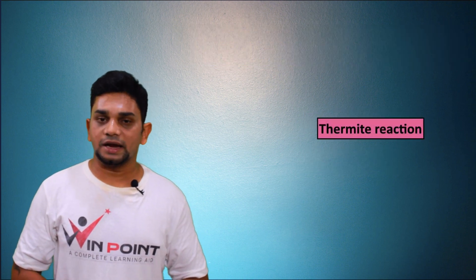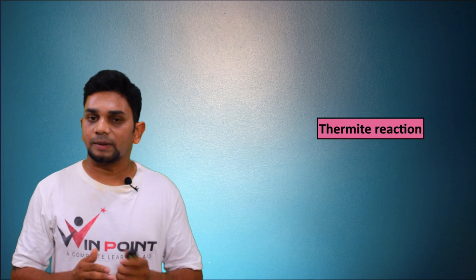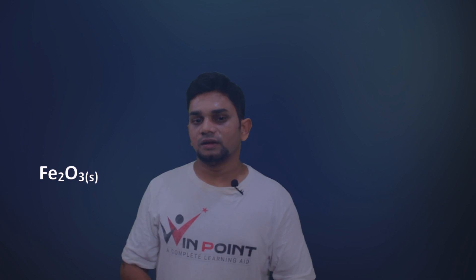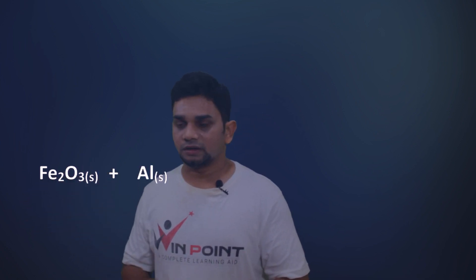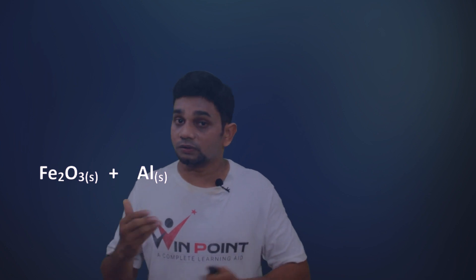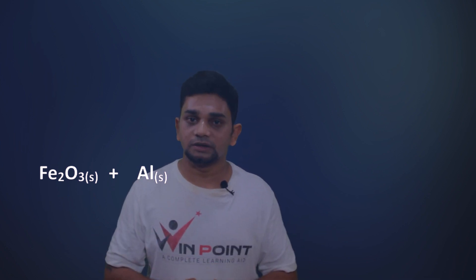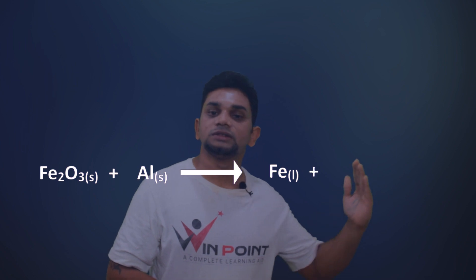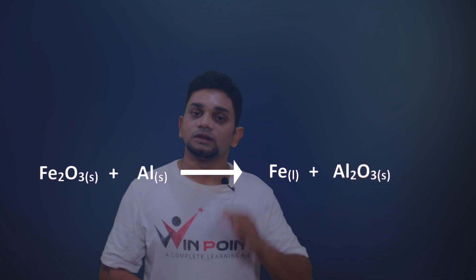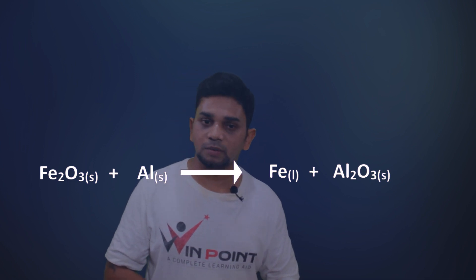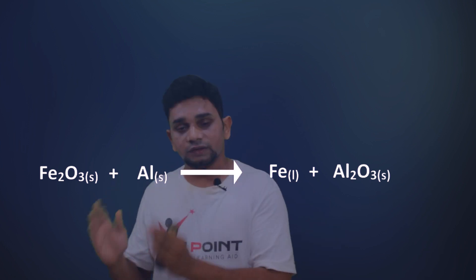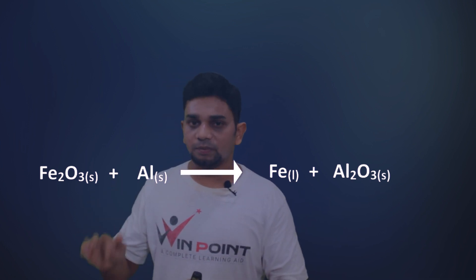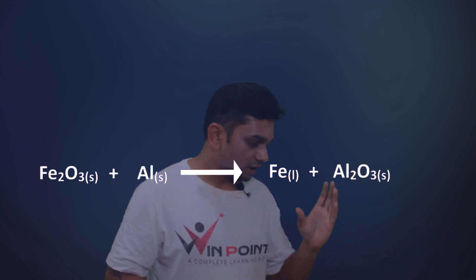Next is the thermite reaction, which is a very important reaction with many applications. We take Fe₂O₃ and aluminium. Since aluminium is more reactive than iron, there is a displacement reaction: Fe₂O₃ + Al → Fe + Al₂O₃. This is similar to the previous reaction — here aluminium replaces iron, giving iron alone and aluminium oxide.